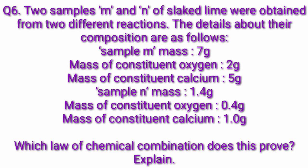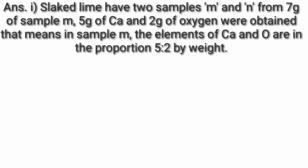Question number 6. Two samples M and N of slaked lime were obtained from two different reactions. The details about their composition are as follows: Sample M — mass 7g, mass of constituent oxygen 2g, mass of constituent calcium 5g. Sample N — mass 1.4g, mass of constituent oxygen 0.4g, mass of constituent calcium 1.0g. Which law of chemical combination does this prove? Explain. Answer: From 7g of sample M, 5g of Ca and 2g of oxygen were obtained.